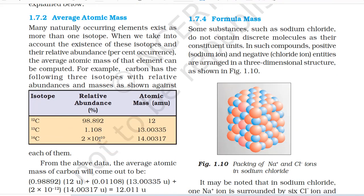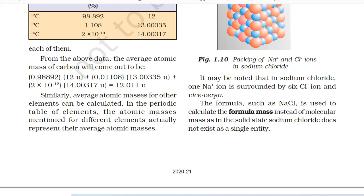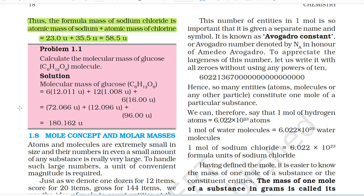1.7.4 Formula Mass. Some substances such as sodium chloride do not contain discrete molecules as their constituent units. In such compounds, positive (sodium ion) and negative (chloride ion) entities are arranged in a three-dimensional structure. In sodium chloride, one Na⁺ ion is surrounded by six Cl⁻ ions and vice versa. The formula such as NaCl is used to calculate the formula mass instead of molecular mass. Thus, the formula mass of sodium chloride = atomic mass of sodium + atomic mass of chlorine = 23.0u + 35.5u = 58.5u.